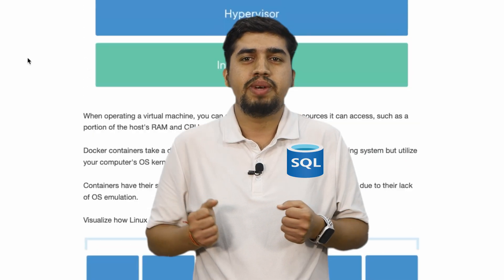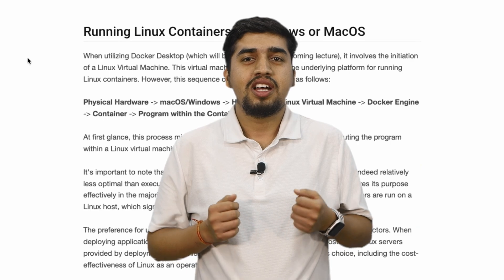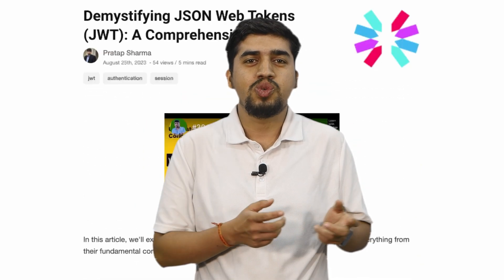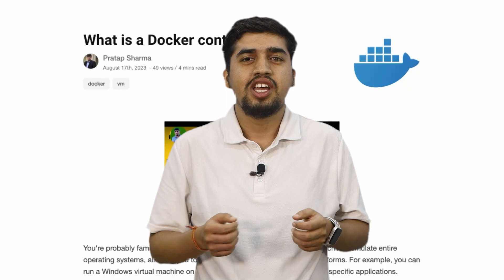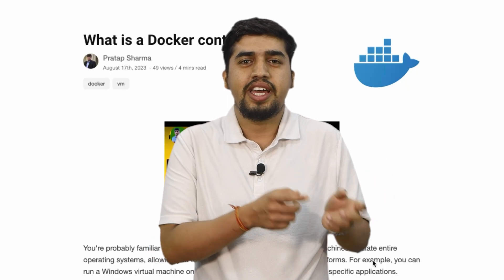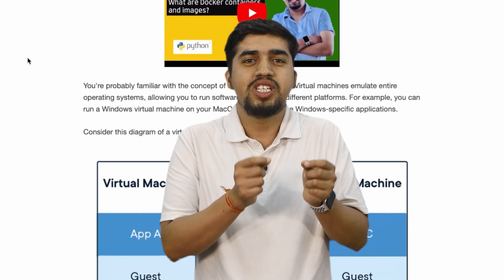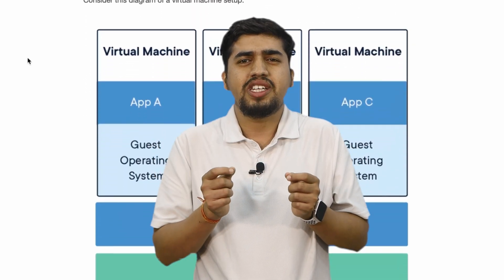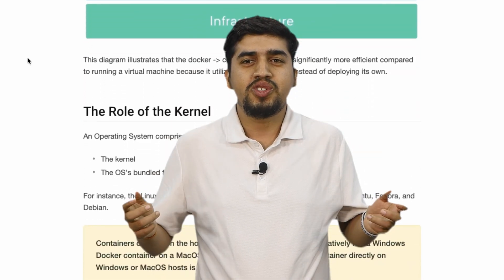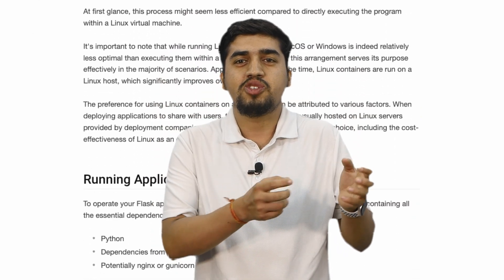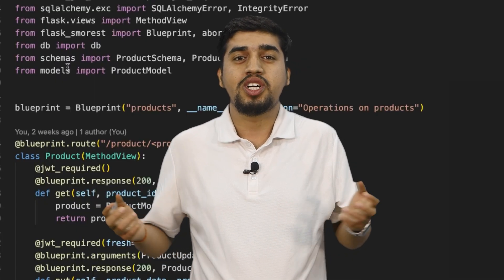We'll delve into SQL databases and SQLAlchemy. You'll also learn how to implement user authentication with Flask-JWT-Extended, which includes features like refresh tokens and admin user privileges. These components are all you need to develop almost any type of REST API project. Throughout this journey, I'll demonstrate how to test your API using Postman and how to document it using Swagger UI.